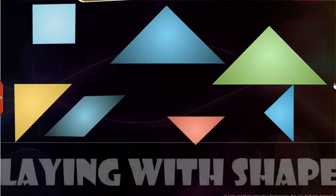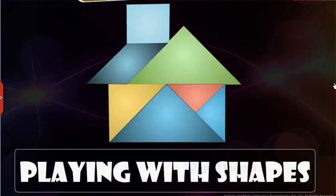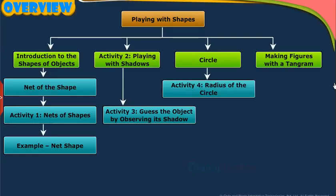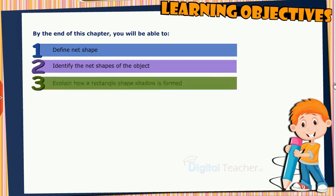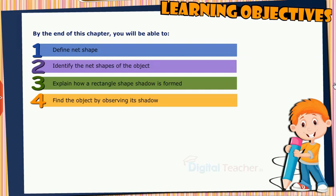Welcome to the chapter playing with shapes. This slide presents the overview of the chapter. By the end of this chapter you will be able to define net shape, identify the net shapes of objects, and explain how a rectangle shaped shadow is formed.